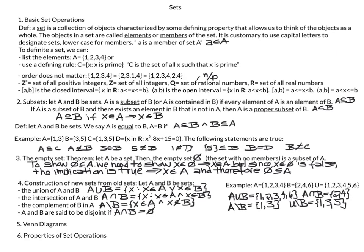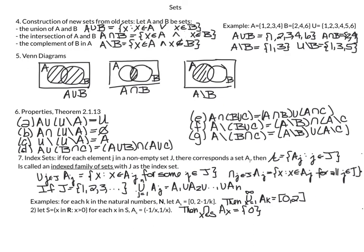A quick review of the first overview page: we covered set definitions, subsets, examples, and set equality. I did not mention the empty set — denoted with the null symbol — which is the set with no members; it is a subset of all other sets. We also covered construction of new sets via union, intersection, and complement. Two sets are disjoint if their intersection is null — they have no elements in common. We also covered Venn diagrams and properties of set operators.